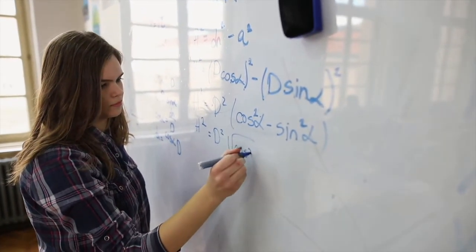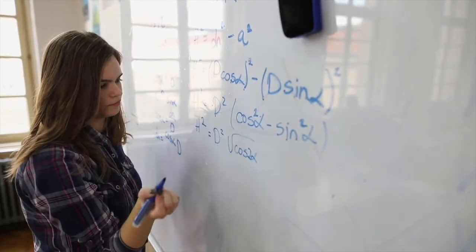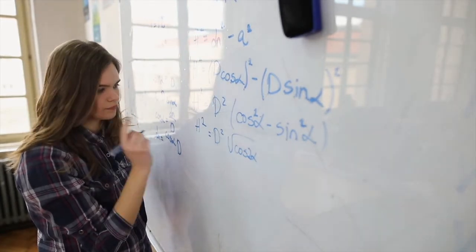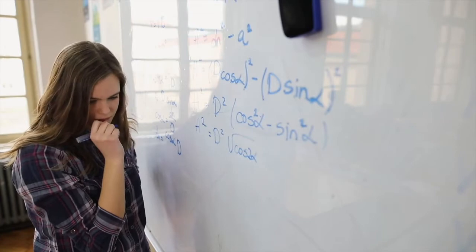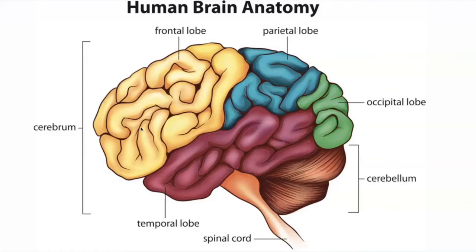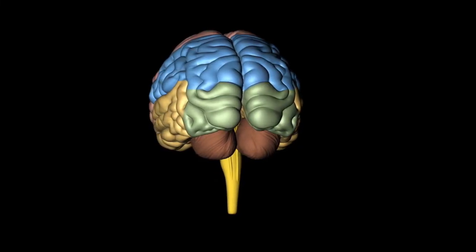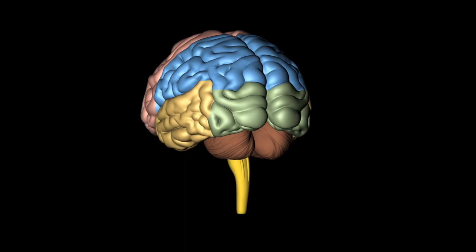Your frontal lobe is responsible for personality, behavior, emotions, judgment, planning, problem-solving, speech, speaking and writing. Broca's area is located in the frontal lobe. Body movement, intelligence, concentration, and self-awareness. There's also a motor strip in the frontal lobe. So if you get damage to your frontal lobe, it can result in loss of simple movement of various body parts.